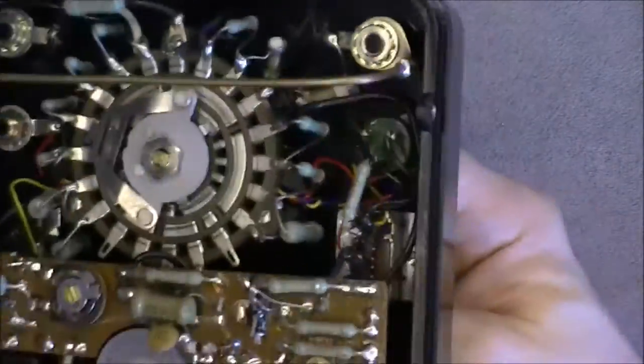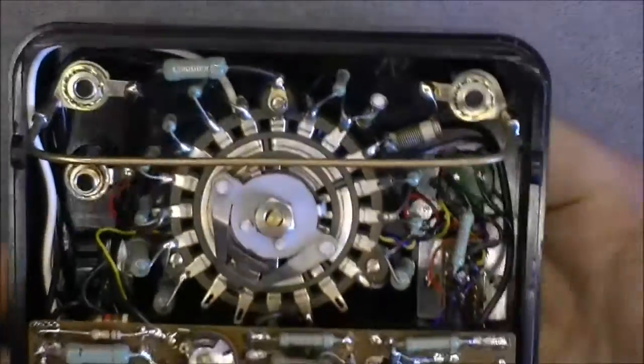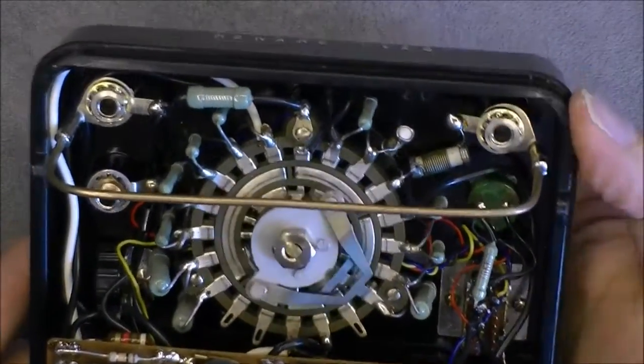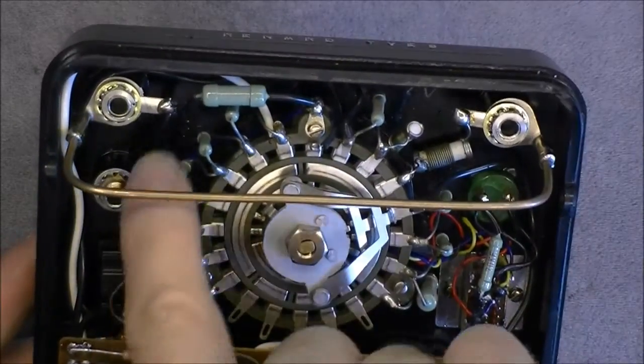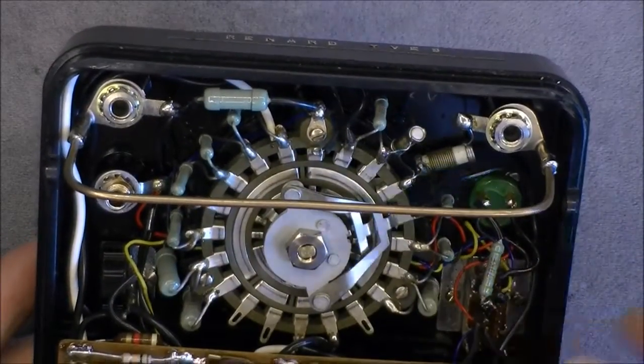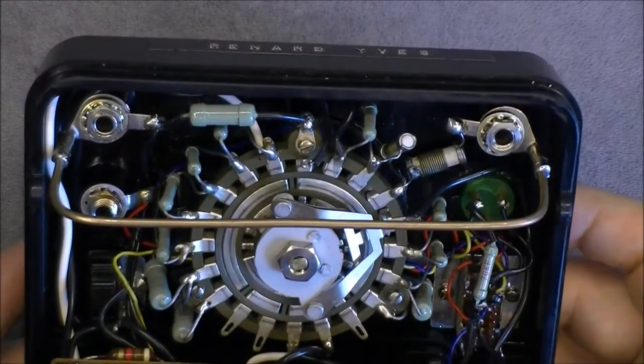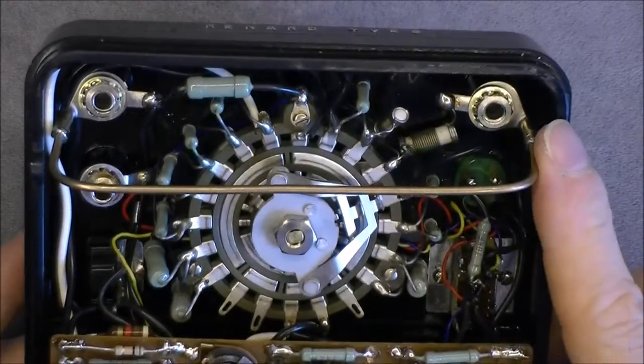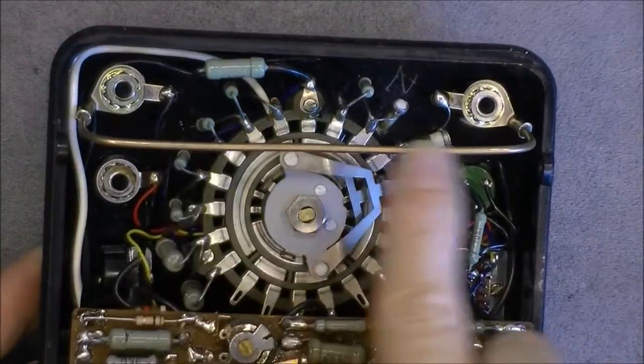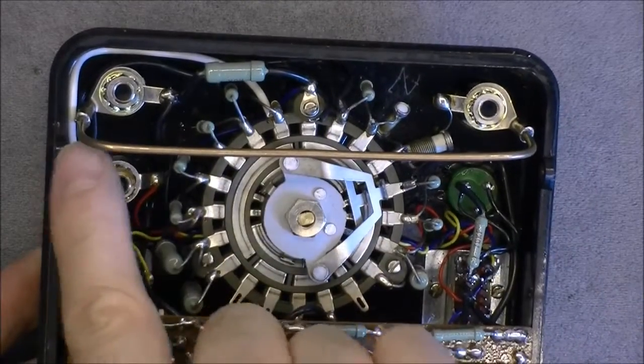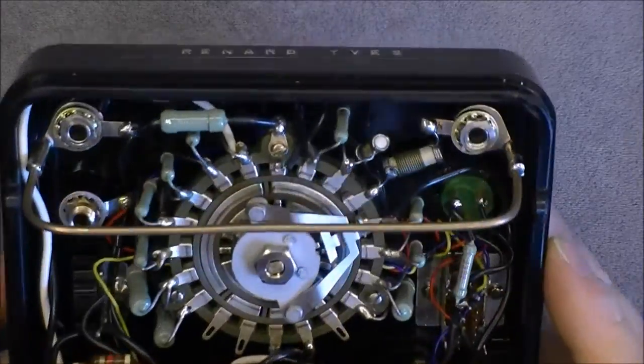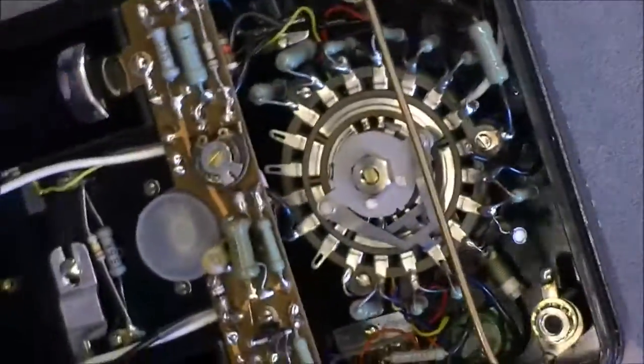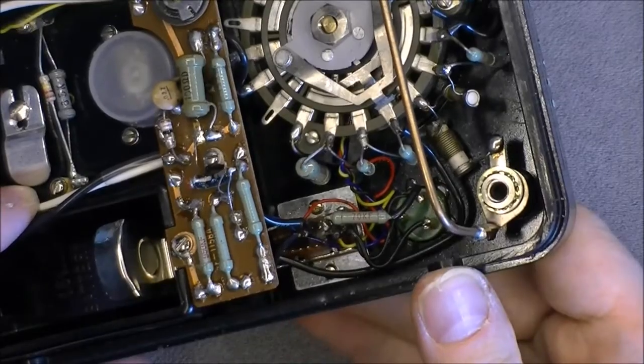We have here the main rotary switch. Pretty nice unit here, it seems. With resistors all the way around for the different scales. This must be the high current shunt resistor. And here we have a function selector for the transistor tester.